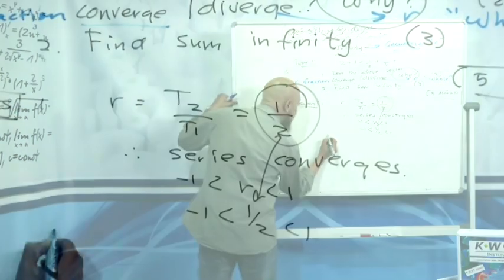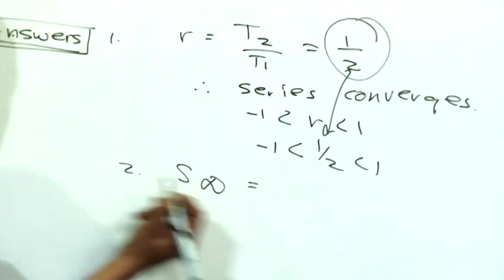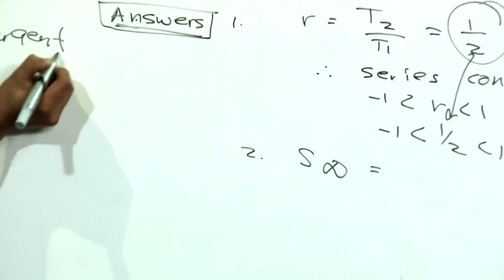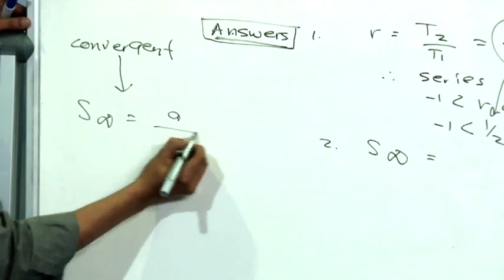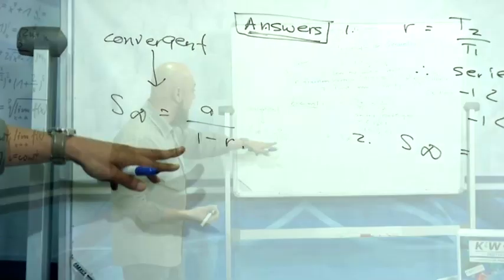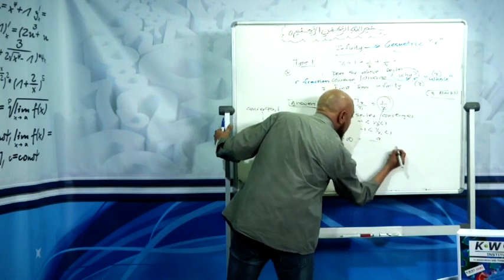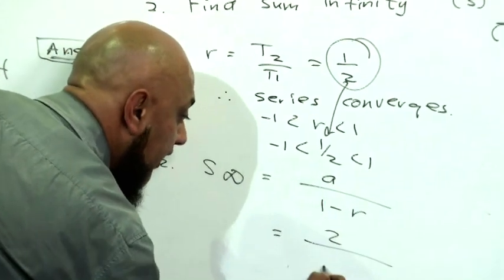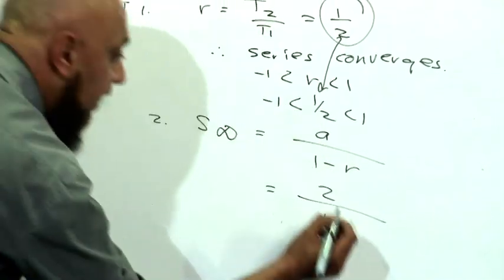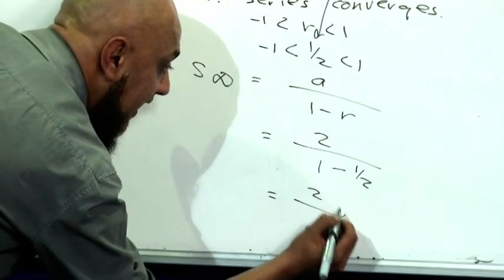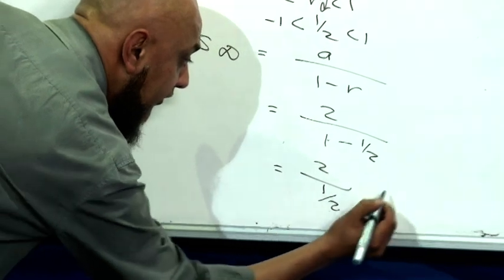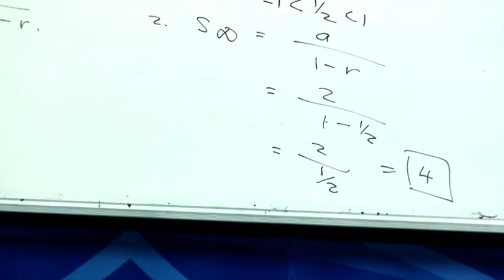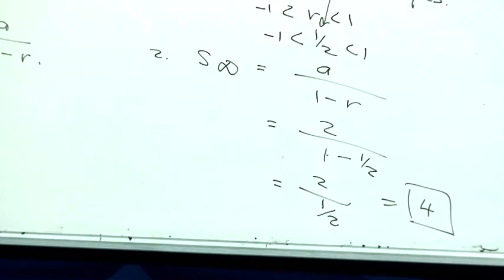Question number two: find the sum to infinity. S to infinity for convergent is equal to a over one minus R. What is a? Your first term is two over one minus what's your common ratio? One half. Which is equal to two divided by one minus a half is a half. Two divided by a half is four. Our sum to infinity is four.